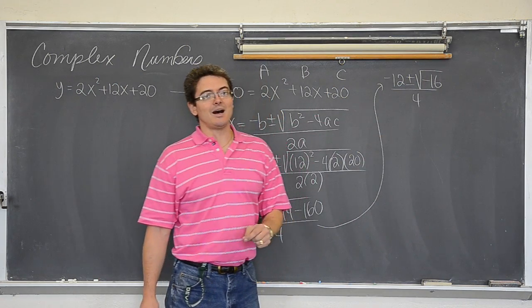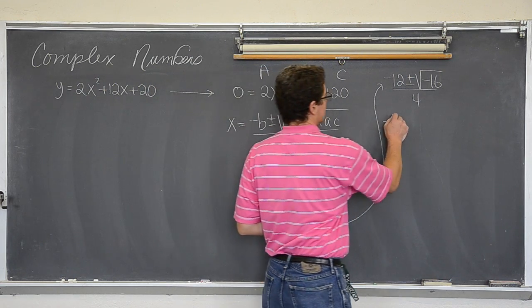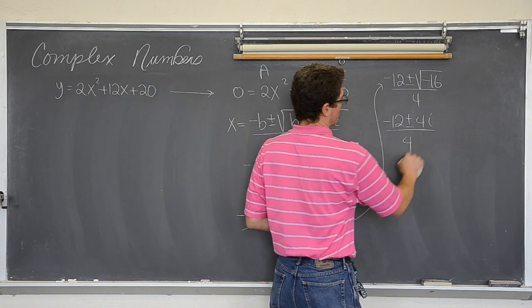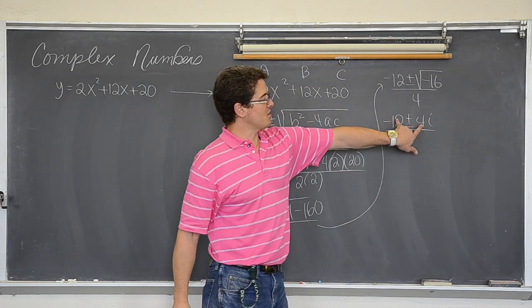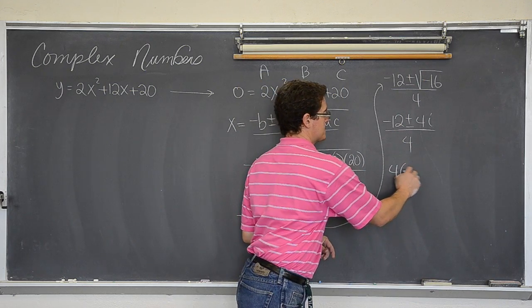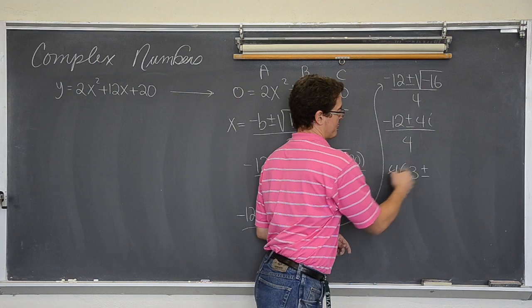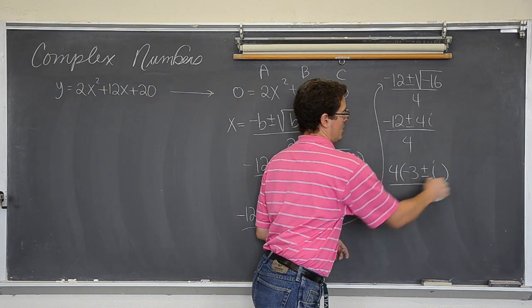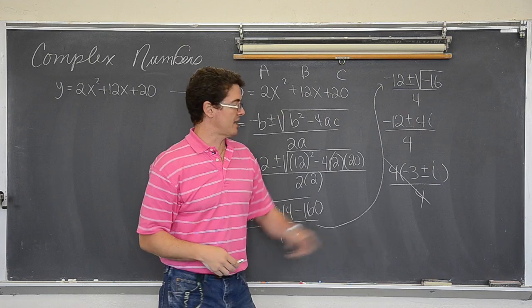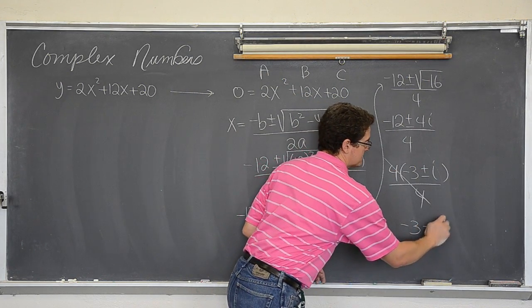The square root of negative one is i and the square root of sixteen is four. So this becomes negative twelve plus or minus 4i over four. Both of these terms have a factor of four that we can cancel with the bottom. That is four times negative three. Twelve divided by four is negative three. Plus or minus four divided by four is one. So i over four. And those common factors cancel out. So we have our imaginary solution of negative three plus or minus i.